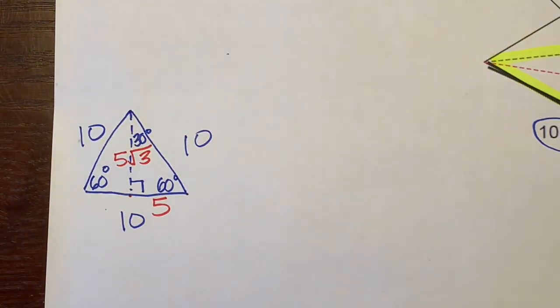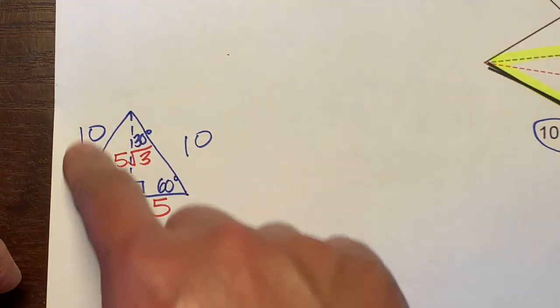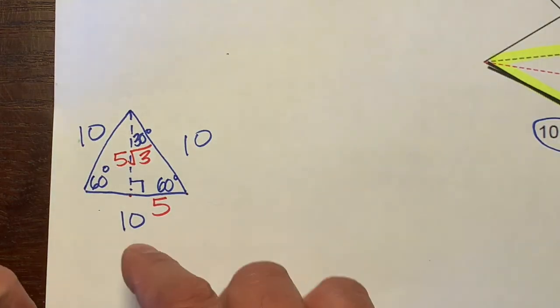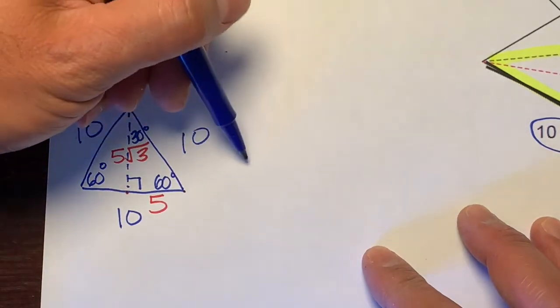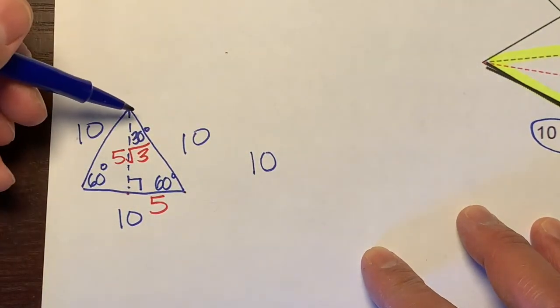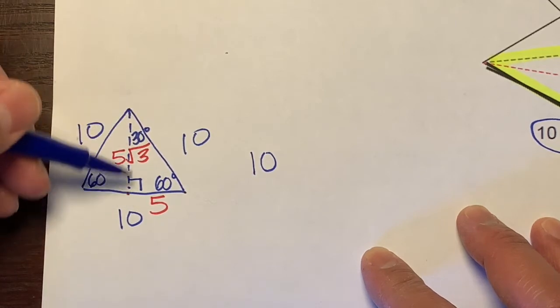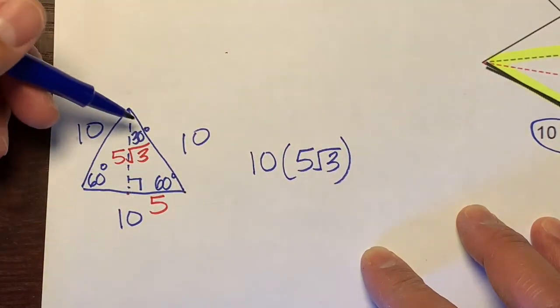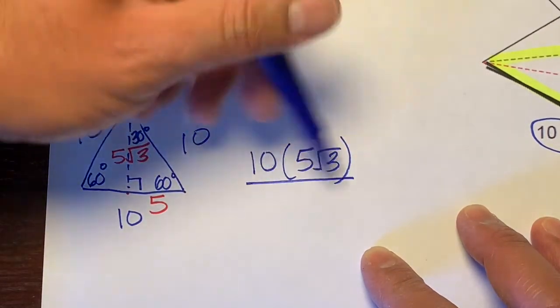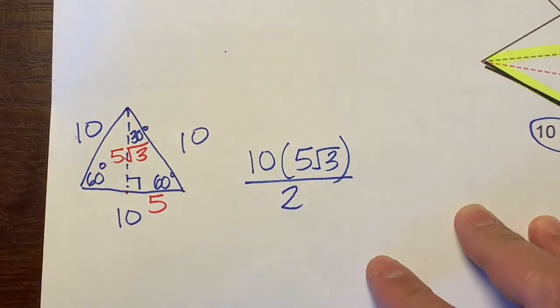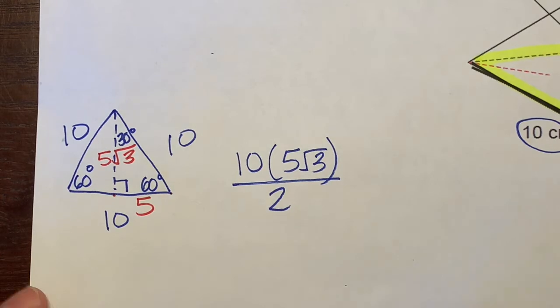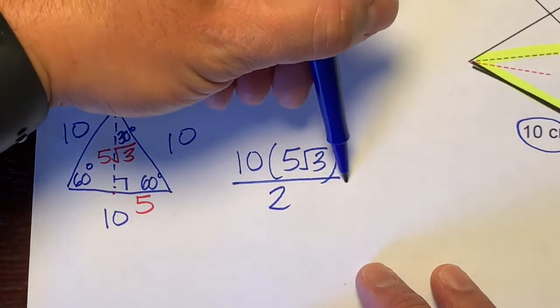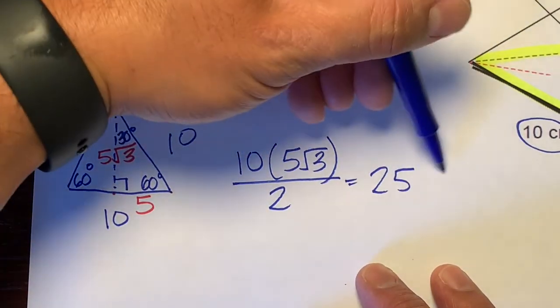Now we have everything we need to figure out the area of this entire base. The area of a triangle is base times height divided by 2. Our base of this triangle is 10 times its perpendicular length or height, 5 radical 3. Since it's a triangle, it's half of a rectangle, so we'll divide by 2. Let's make some numbers smaller before making them bigger. 10 divided by 2 is 5. 5 times 5 would be 25 radical 3.